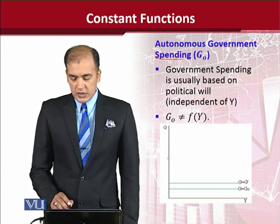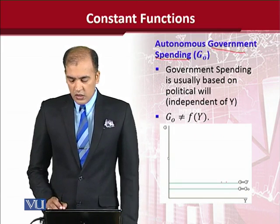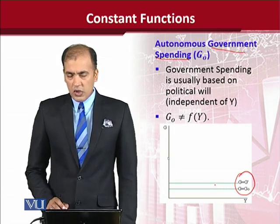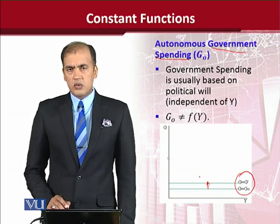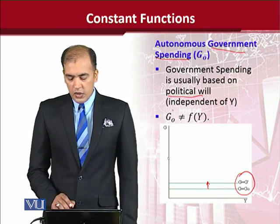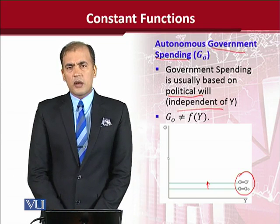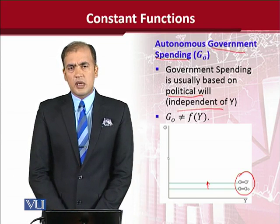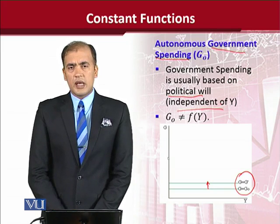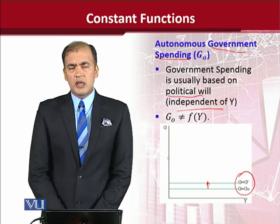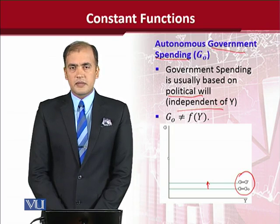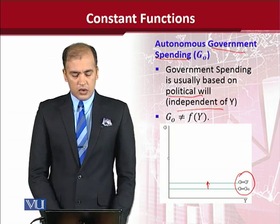Now let's take another example, which is government spending. Looking at the diagram, it is quite similar to the previous example — we observe a shift in this parallel line to the x-axis. This shift can be due to political will, because decisions about government spending are made by policy makers and are not mostly dependent on national income. It is the political will that decides whether to spend more on the masses or not. So this is another example of constant functions.